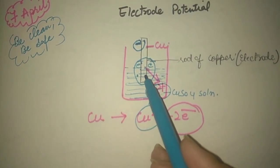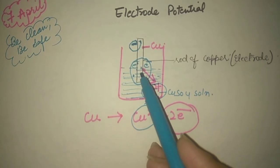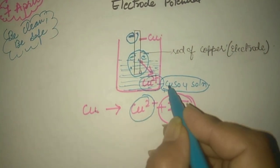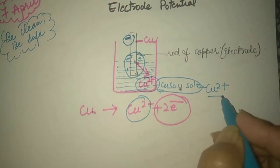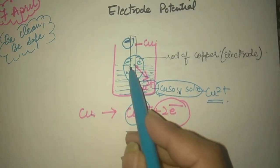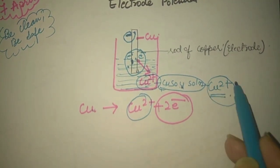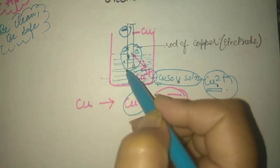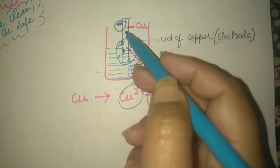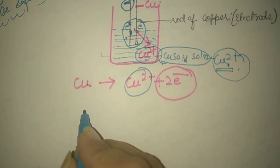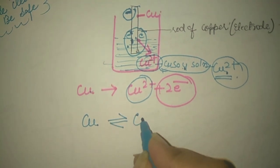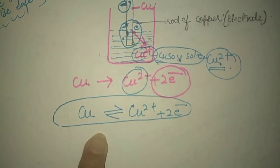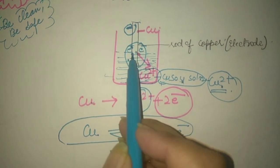These negative electrons present at the electrode also have the tendency to attract the positive ions in the solution. We have taken copper sulfate solution, where copper is present as Cu2+. These electrons also have the tendency to attract the positive ions present in the solution. This means the copper electrode will not keep on losing electrons indefinitely, but an equilibrium will be attained: Cu ⇌ Cu2+ + 2e⁻. After some time, an equilibrium is reached where separation of positive and negative charge occurs.